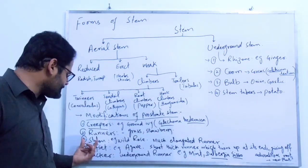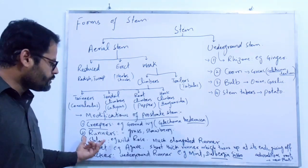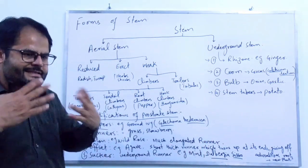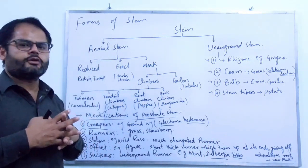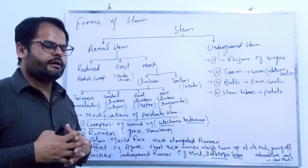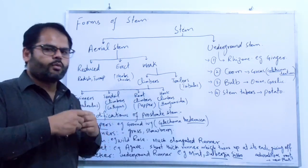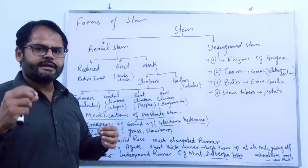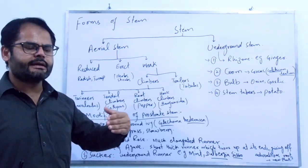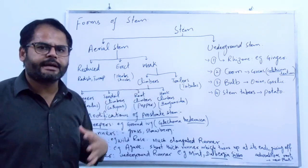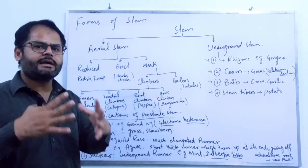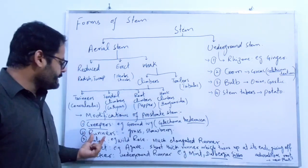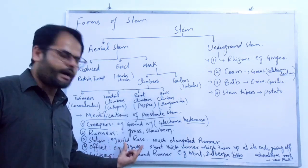The third form of prostrate stem is stolon. Stolon is basically a much elongated runner found in flowering plants. One branch grows and when it touches the ground it develops adventitious roots and later cuts off from the parental plant, giving rise to a new plant. The familiar example of stolon is wild rose.